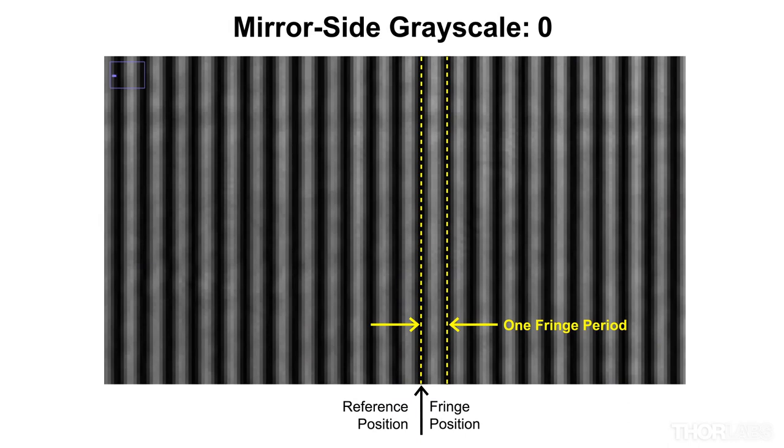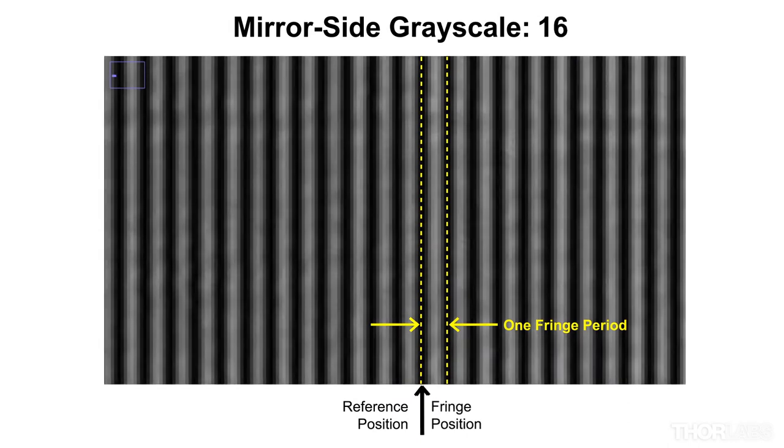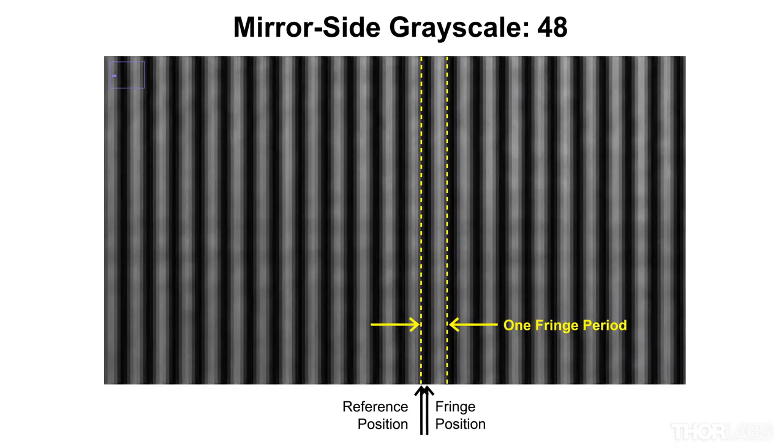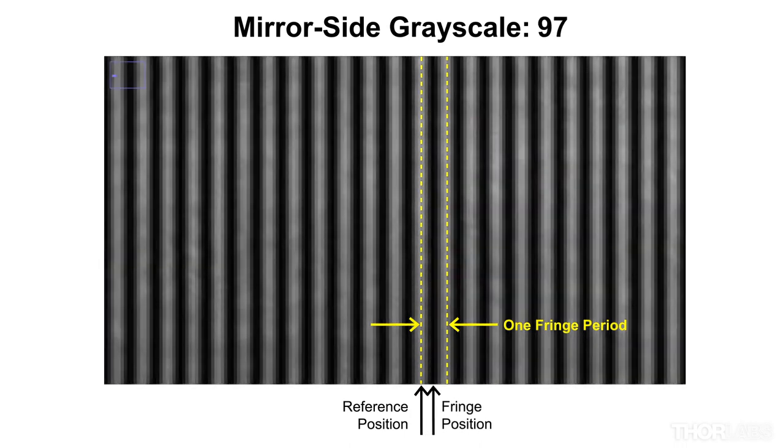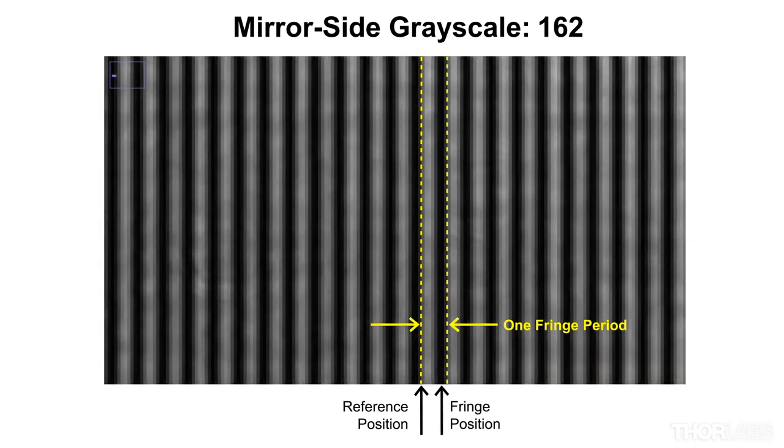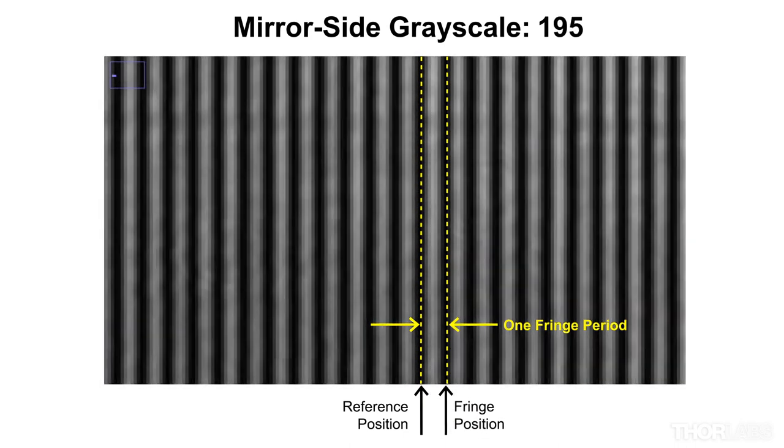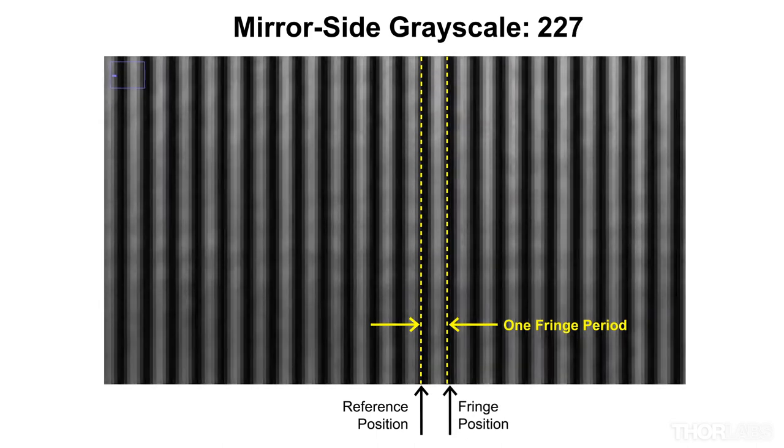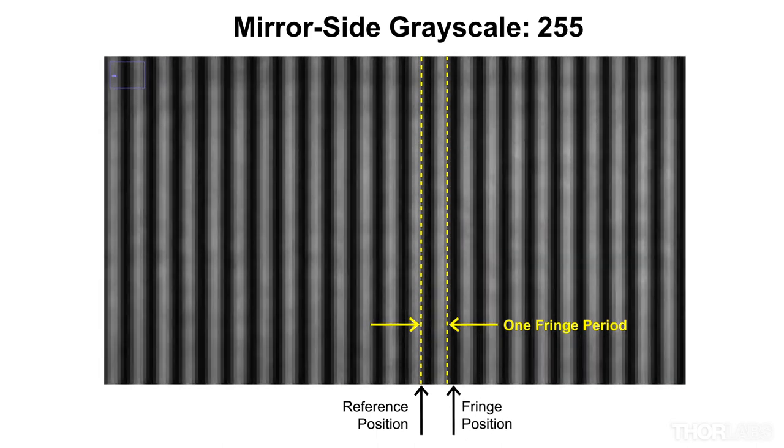If I sequence the images from the data set into a video, I can see the fringes move horizontally across the screen. The fringes move each time the grayscale value of the mirror side is incremented because the phase delay of the reflected beam changes. In this case, total movement of the fringes is about one period.